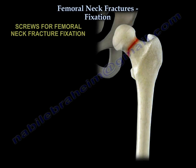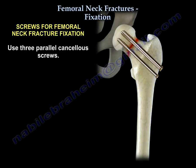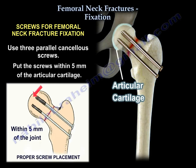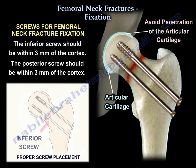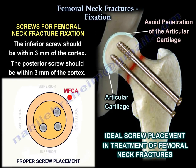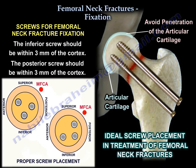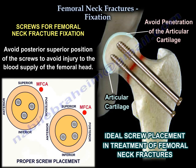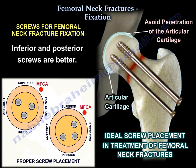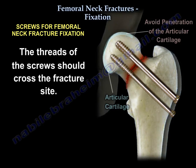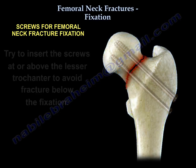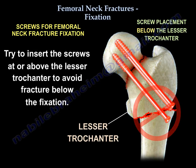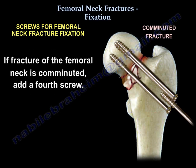For femoral neck fracture fixation, three parallel cancellous screws are used. The screws should be inserted 5 mm from the articular cartilage. The inferior screw should be within 3 mm of the cortex, and the posterior screws within 3 mm of the cortex. Avoid a posterior-superior position of the screws to avoid injury to the blood supply of the head — inferior and posterior screws are better. The screw threads should cross the fracture site. Insert them above the lesser trochanter to avoid fracture below the fixation. If the neck is comminuted, add a fourth screw.